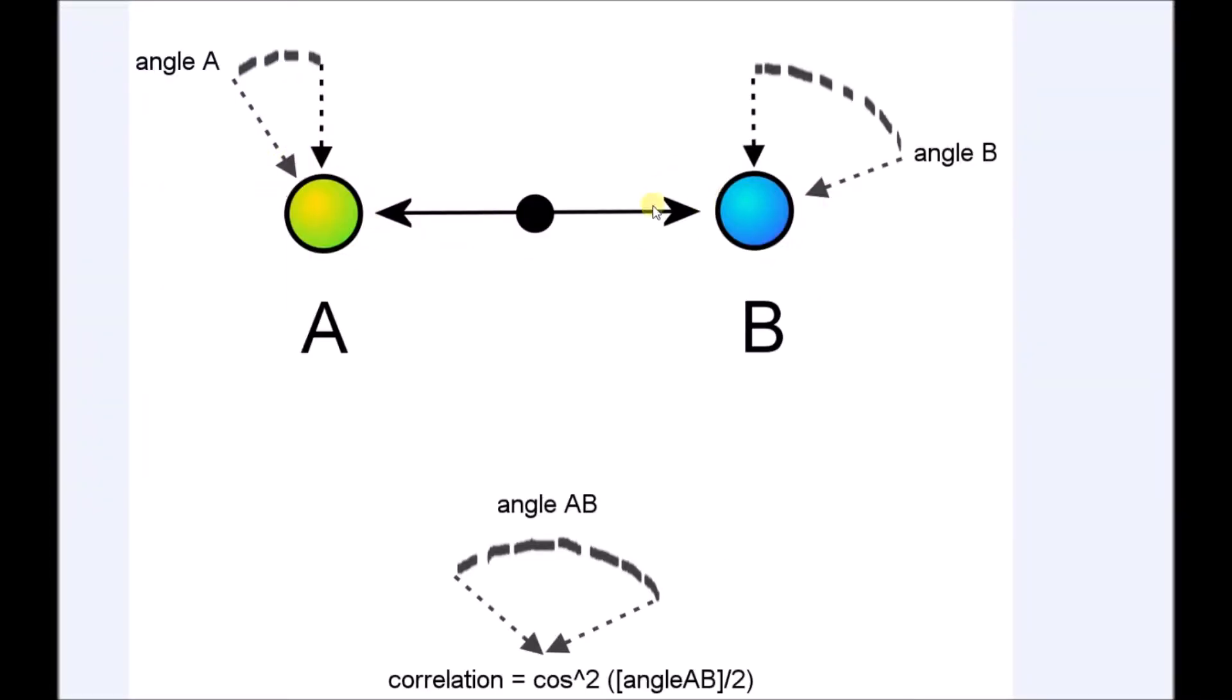We have two entangled particles and we measure the spin A at angle A and B at angle B. The correlation, that means the times they are different or the same, depends on the final angle of measurement they make with each other. That is the angle that angle A and angle B make with each other.